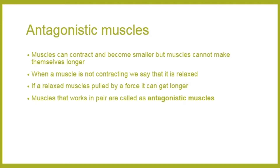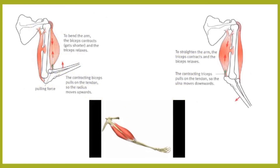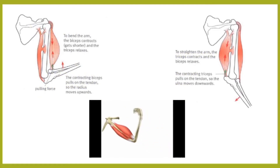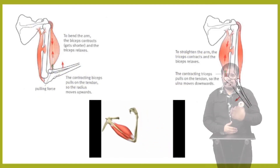When I pull my hand up, my biceps contract and my triceps relax. When I put my hands down again, my biceps relax and my triceps contract. To bend the arm, the biceps contract and the triceps relax, and you can see there is a pulling force created at the point of your elbow.